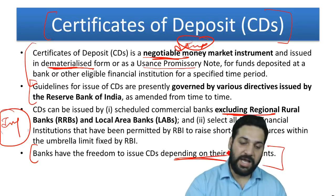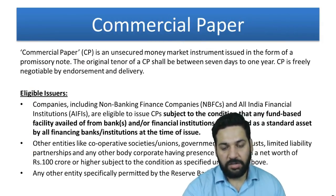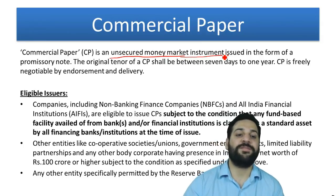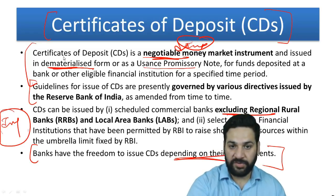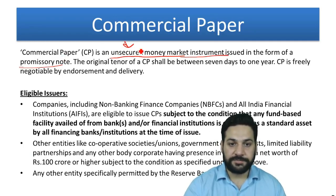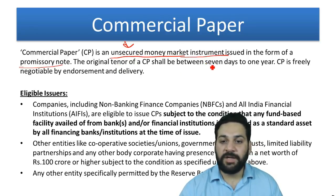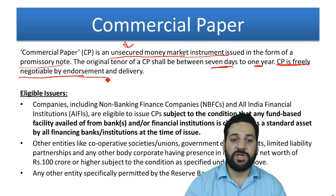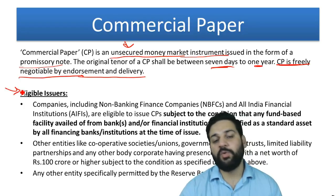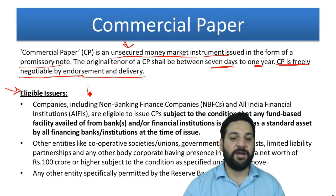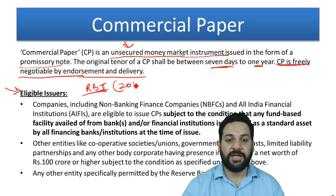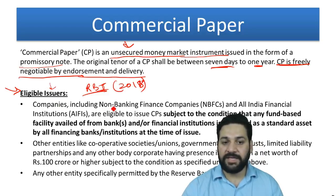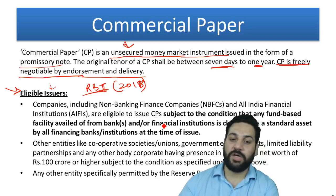Commercial paper is an unsecured money market instrument issued in the form of a promissory note. The original tenure of a CP should be between 7 days to one year. CP is freely negotiable by endorsement and delivery. As per the latest 2018 RBI guidelines, companies including NBFCs and all-India financial institutions are eligible to issue commercial papers.